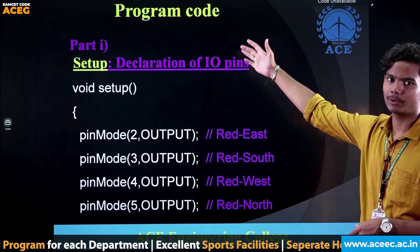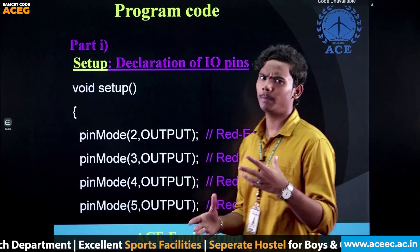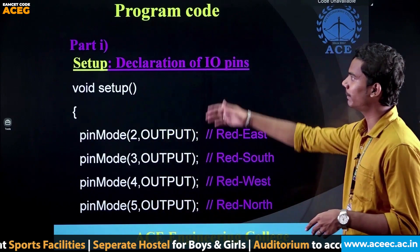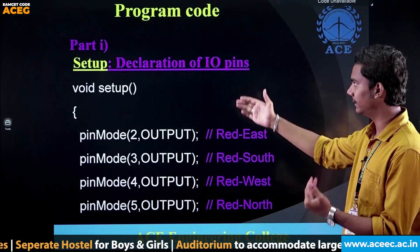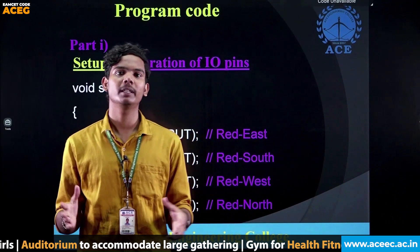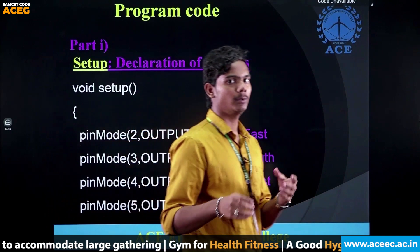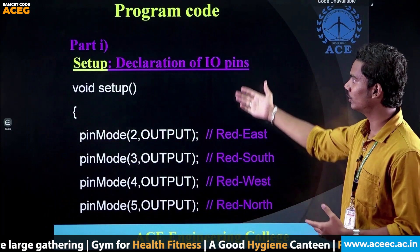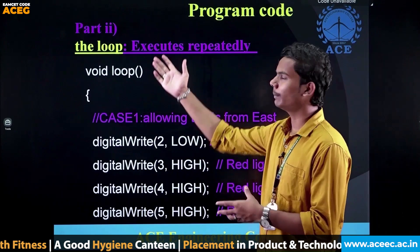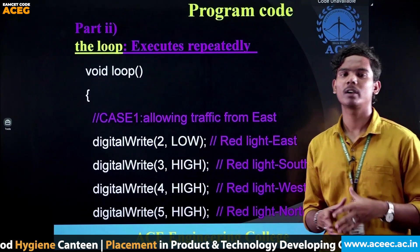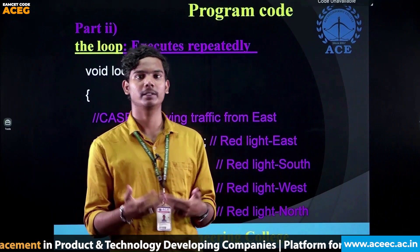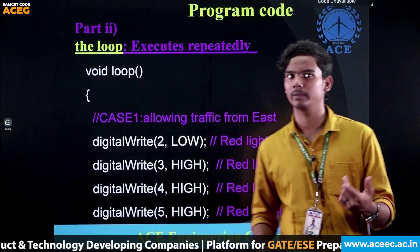The program code is divided into two parts. Part one is the setup, where the declaration of I/O pins takes place — I/O pins being the input and output pins. Part two is the loop, where whatever code is written will keep on executing continuously.